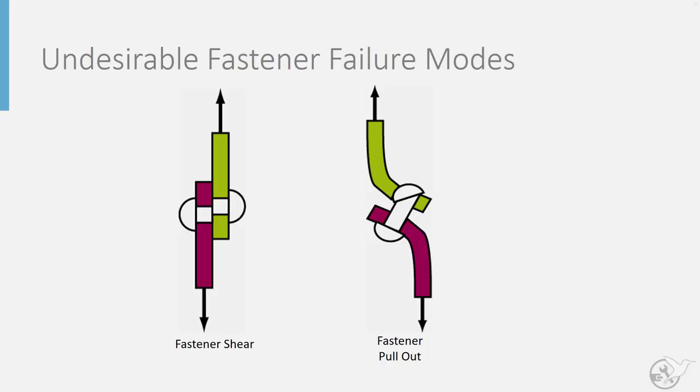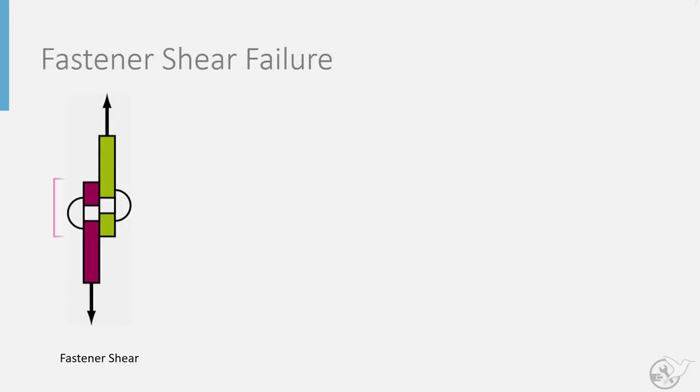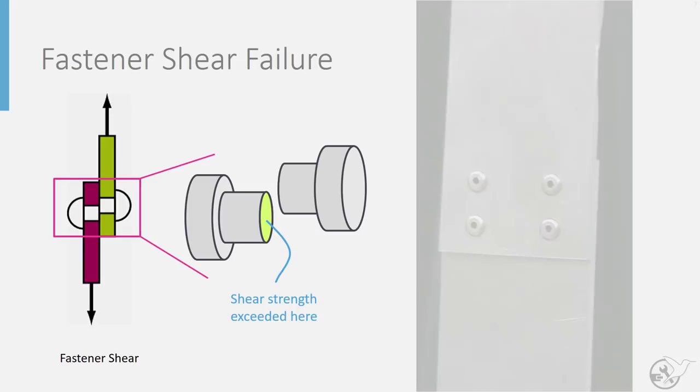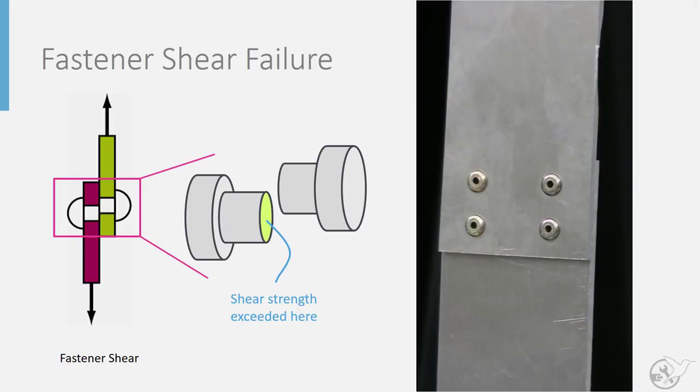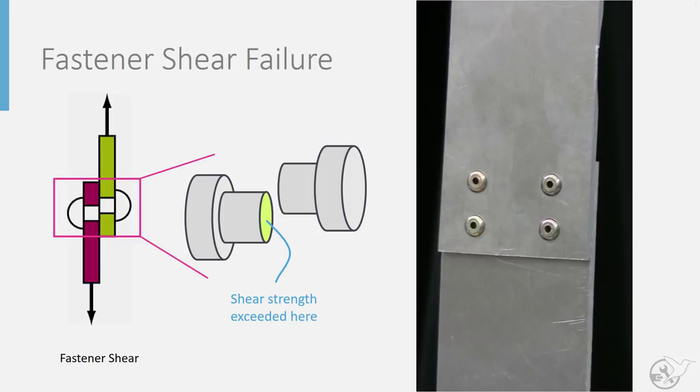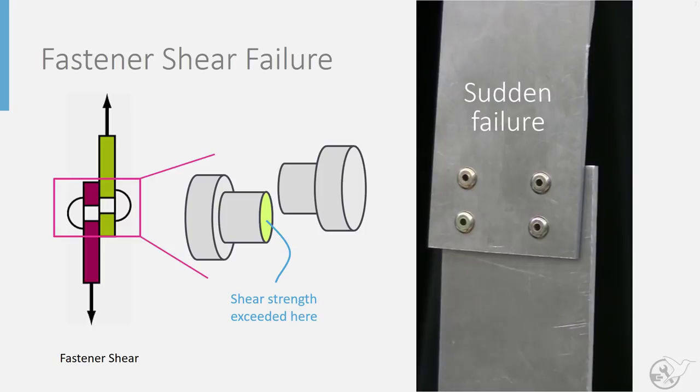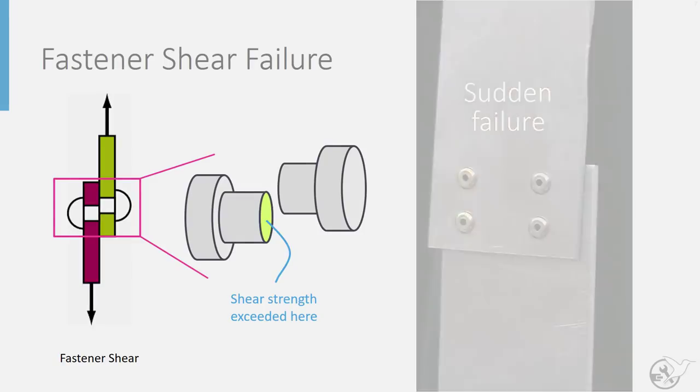Let's take a closer look at each of these failure modes. First, we will look at the undesirable fastener failure modes. Fastener shear failure occurs when the shear stresses in the plane of the fastener exceed the shear strength of the fastener material. This failure mode is typically unstable, as if one fastener fails, load on all the other fasteners increases leading to their immediate failure. Such an unstable failure is another reason why this failure mode is undesirable.